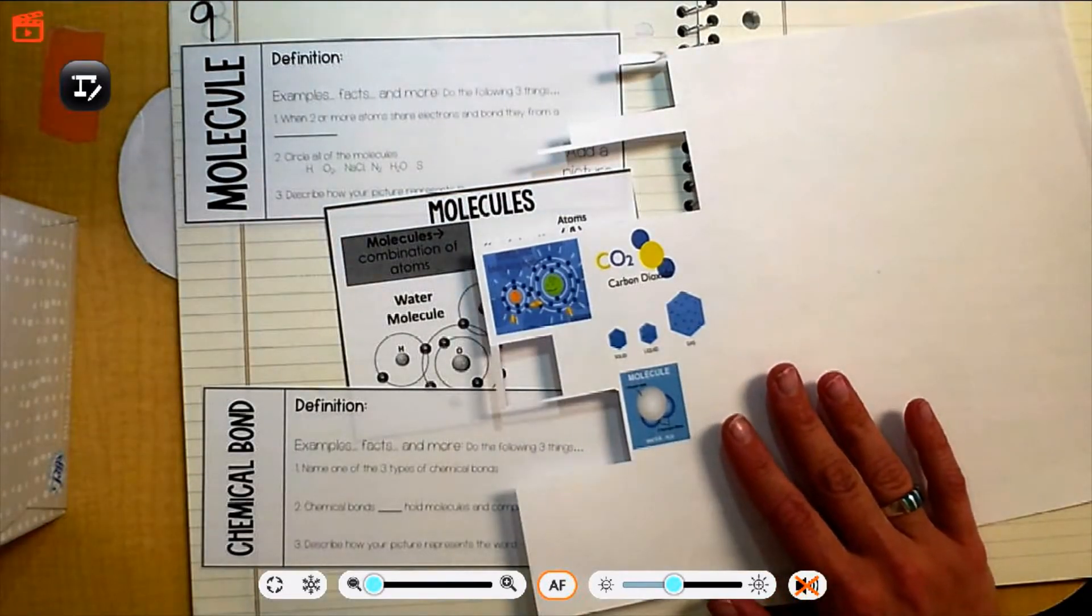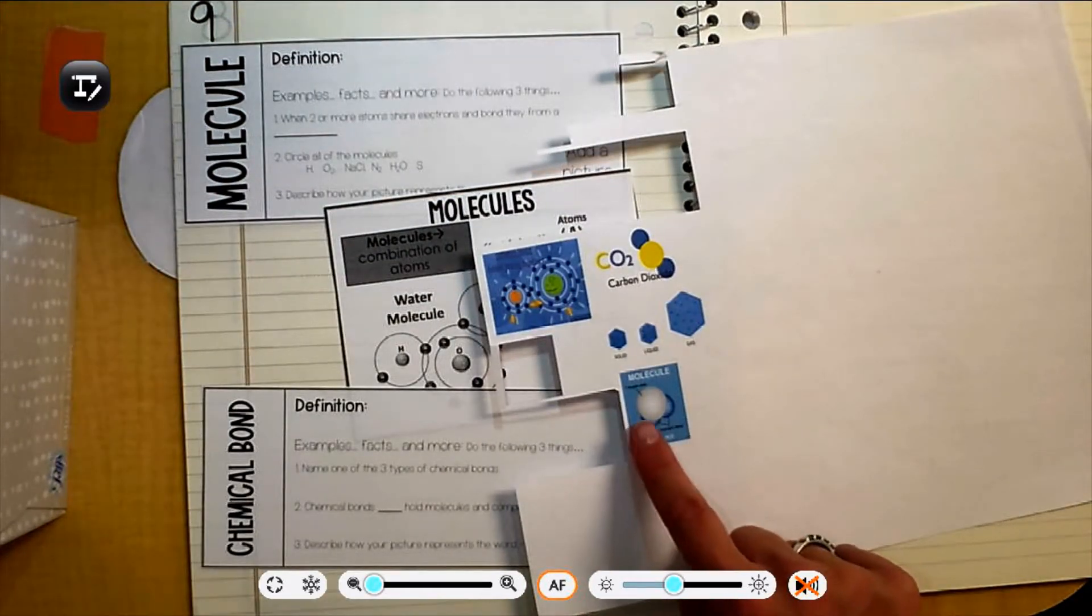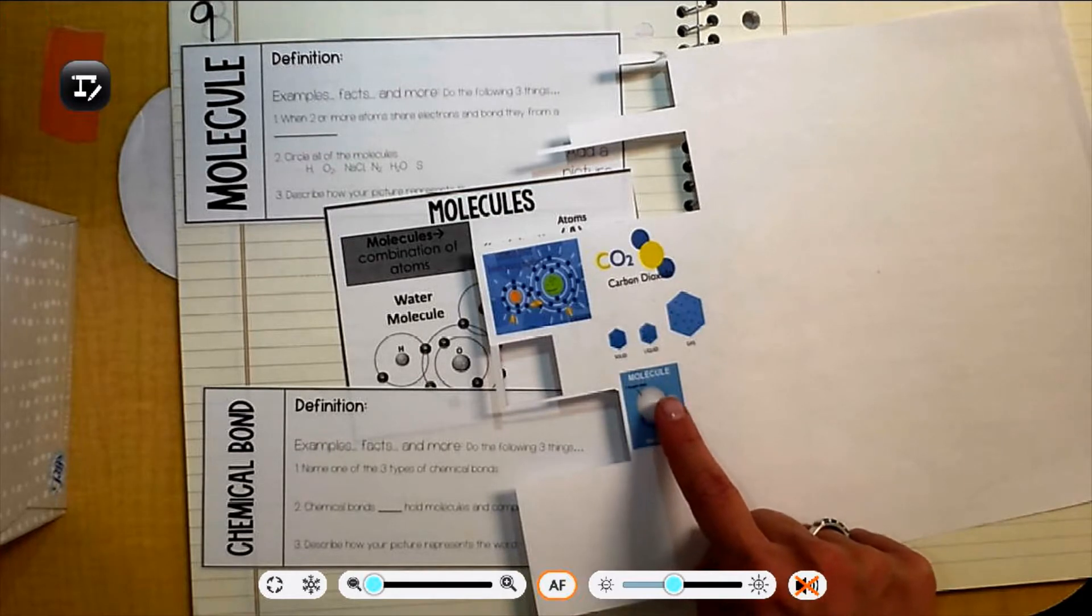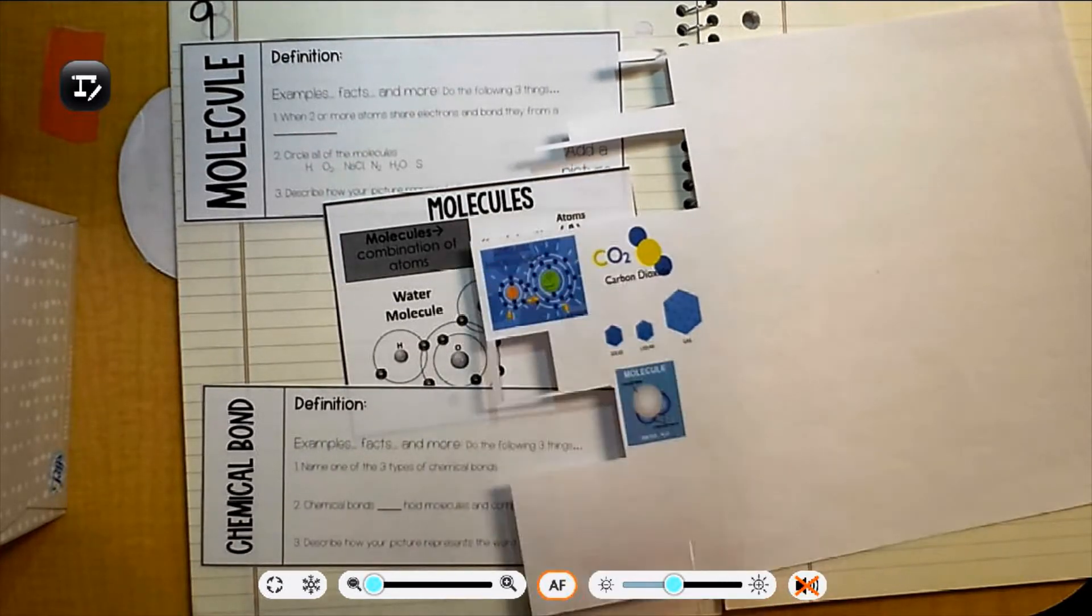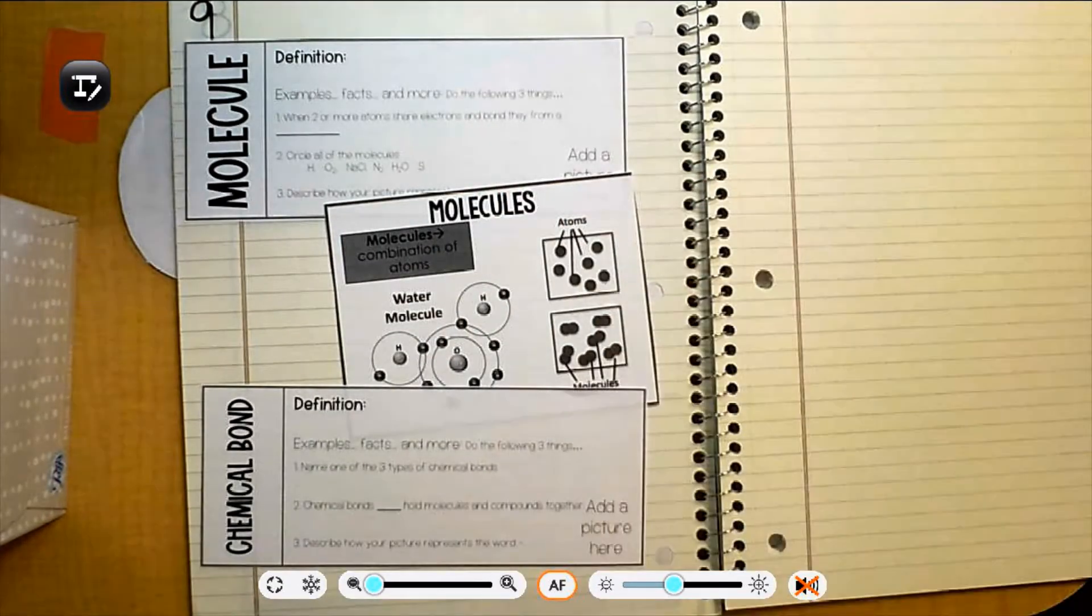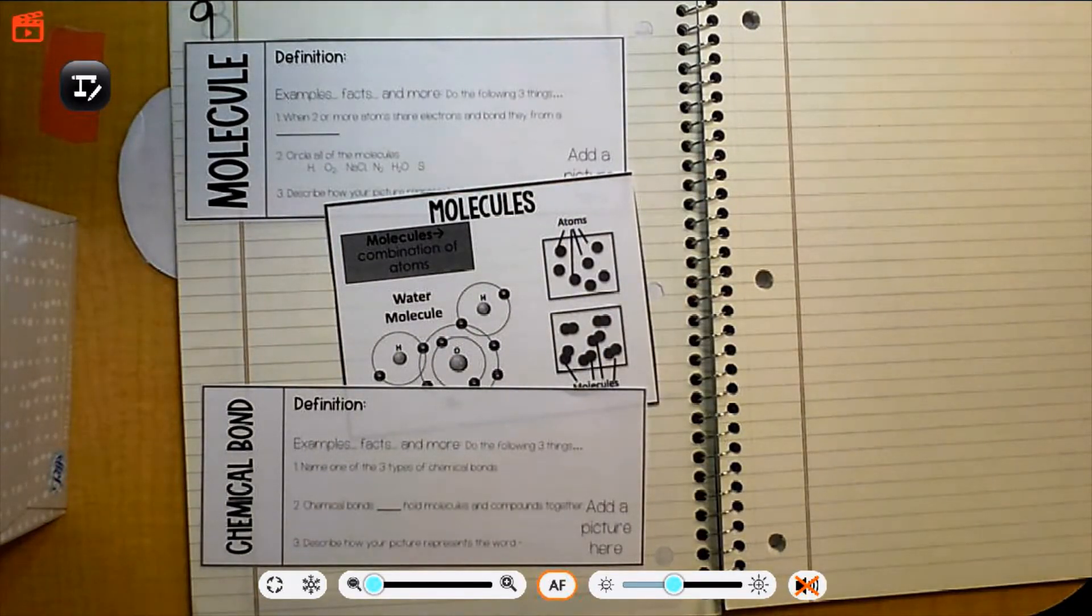And you're going to need the picture, this picture down here that says molecule at the top. And then chemical bonds. It's this one that says chemical bonds. So if you want to pause your video and get those cut out now, that would be a great time to do it. And we are going to get started when you get back with the word molecule so you can set the other two things to the side.